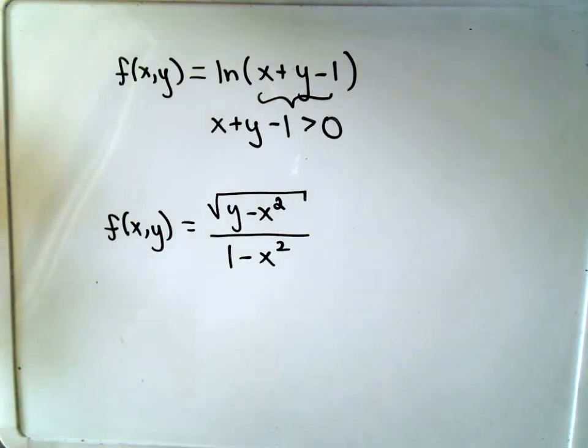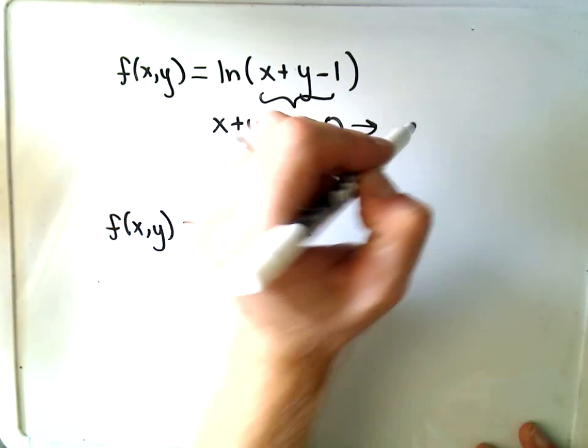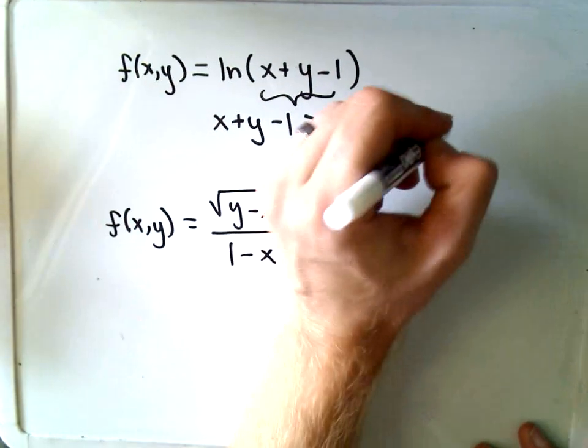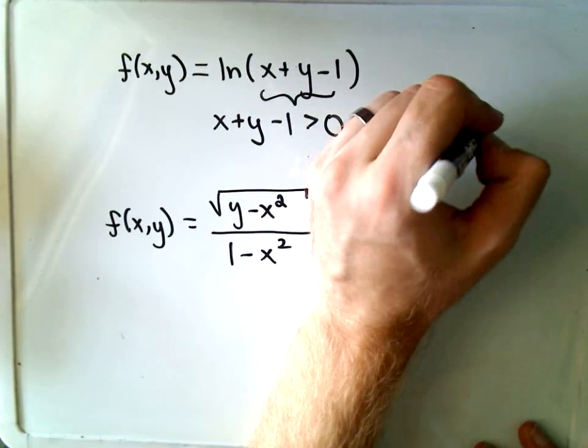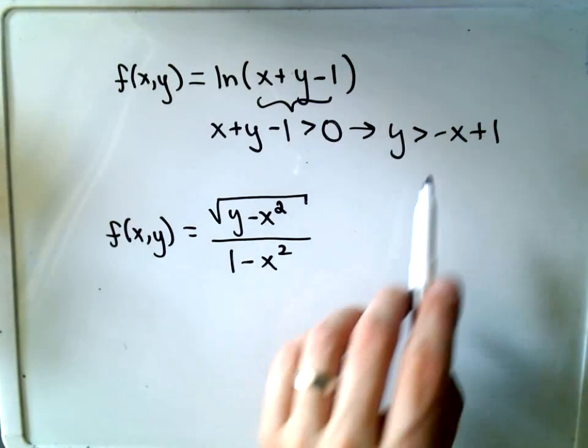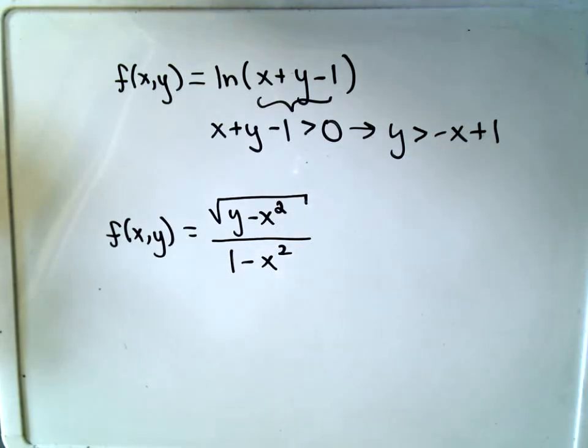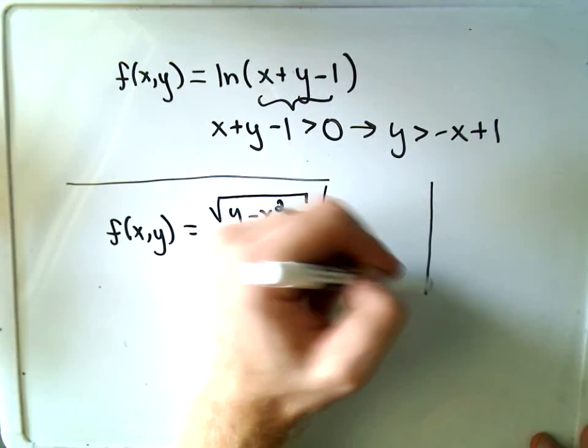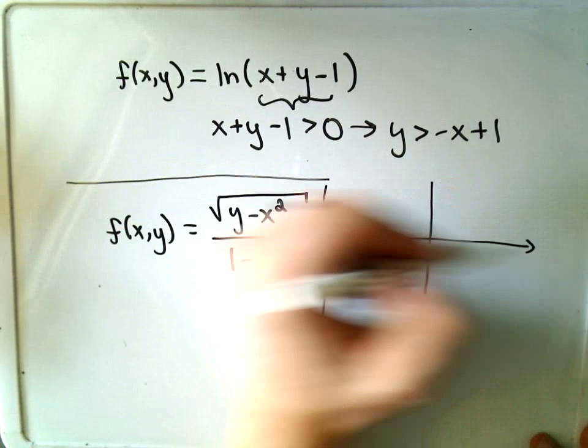And if you want to graph the domain, I could subtract the x to the right side and add the 1. So it basically says the y-coordinates have to be greater than negative x plus 1. Sometimes they'll have you sketch the domain of your function. So if we were going to sketch the domain of our first problem, the domain of the first function...